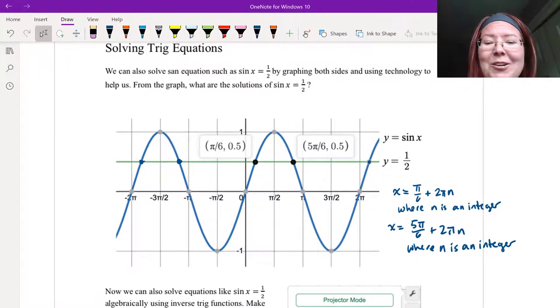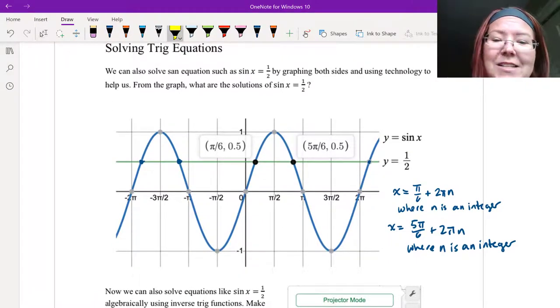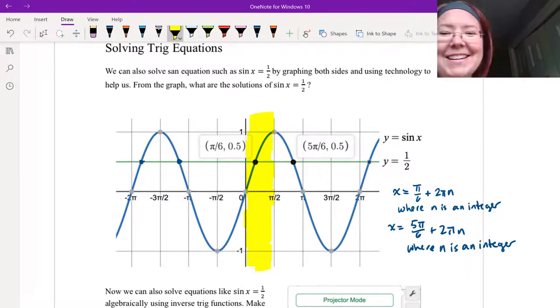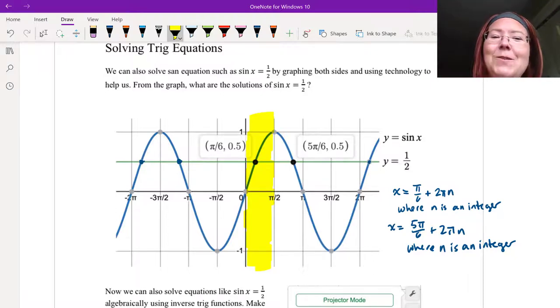But most of the time we're really only interested in the one solution that falls in the first quadrant, because the first quadrant is between 0 and 90 degrees and we do a lot of work in mathematics on right triangles, and all of the angles in a right triangle other than the right angle are between 0 and 90 degrees.